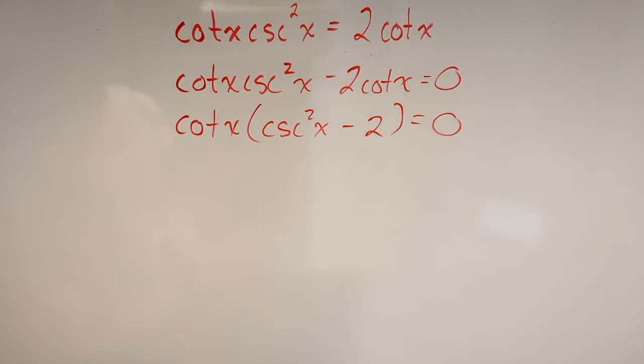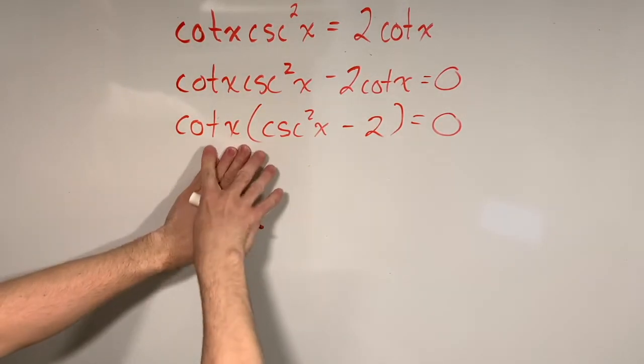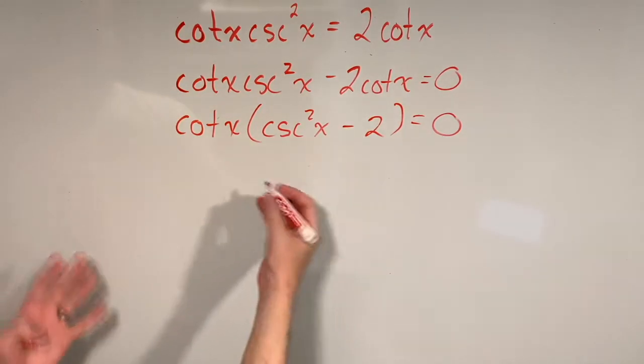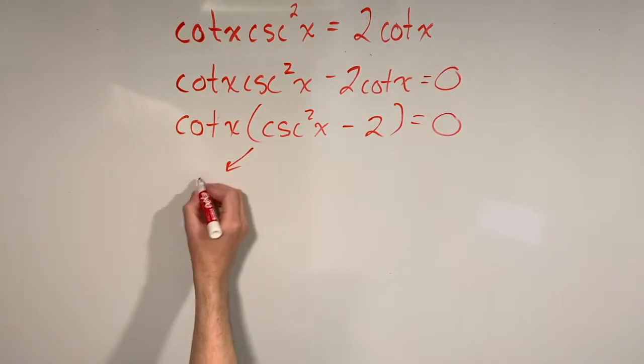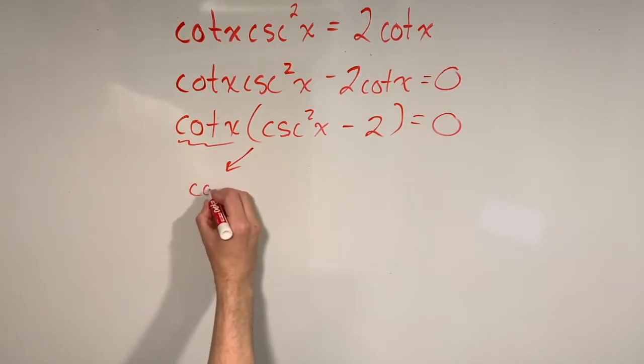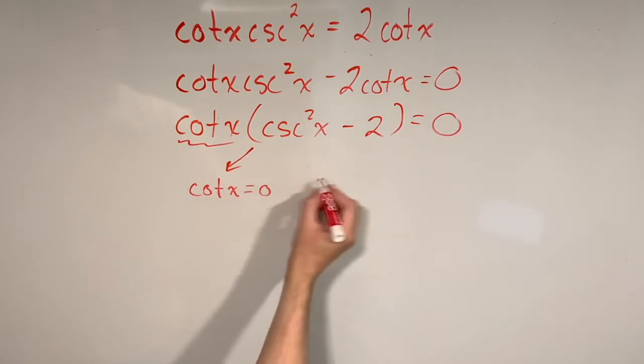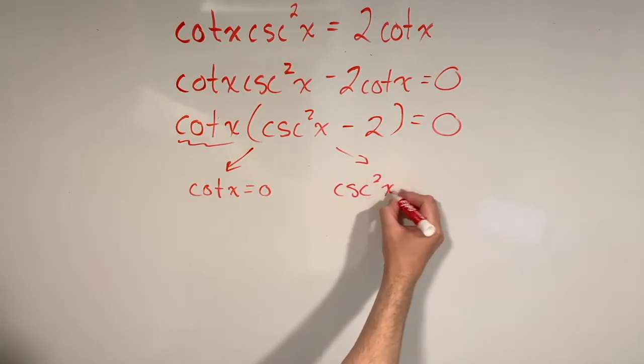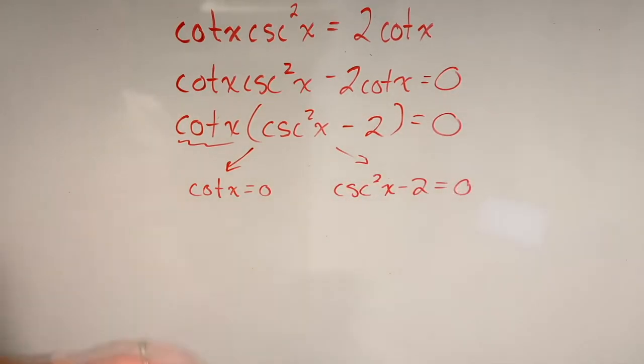So at this point we've factored our equation, and this is great because we've got multiplication happening here. And we know that anytime there's two things multiplied and the whole thing's equal to zero, we can split this up and treat it as two separate cases. One where the first piece is equal to zero, and one where the second piece is equal to zero. So I'm actually going to be solving two trig equations from this point forward.